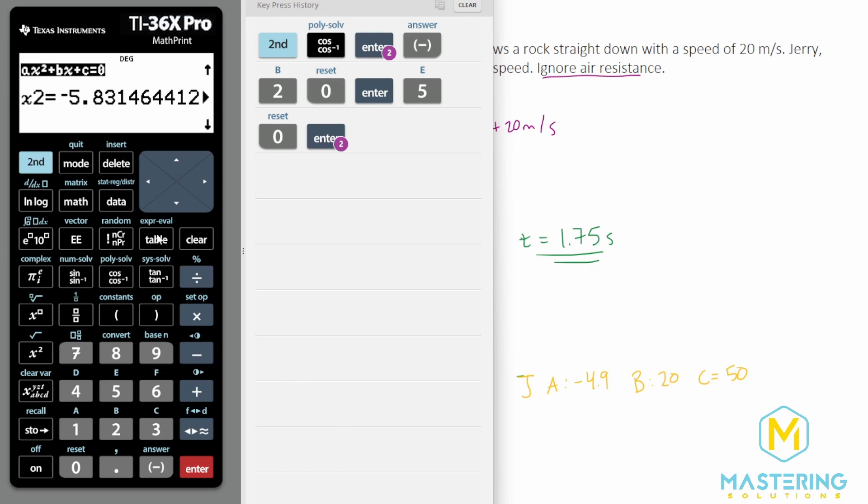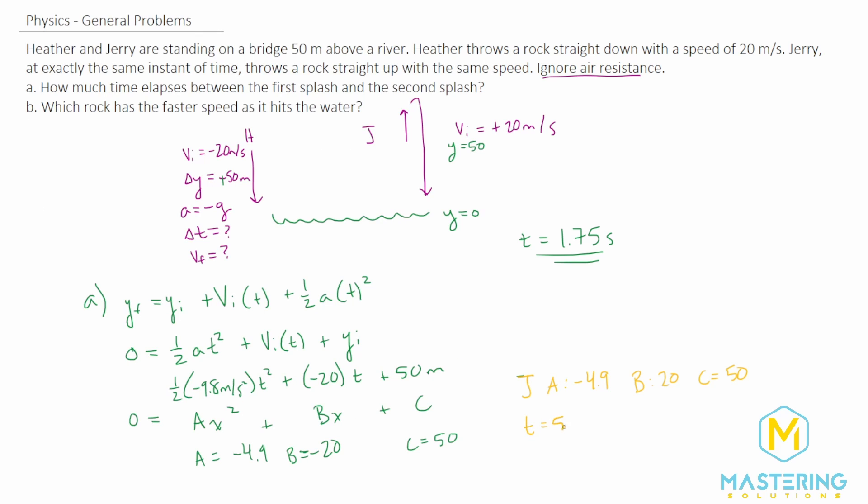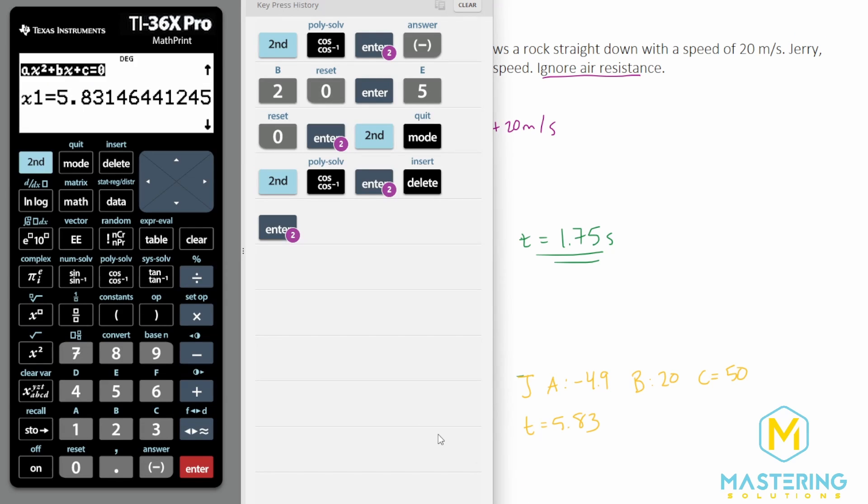So when we go back to our poly solver at negative 4.9, and then we're going to have a positive 20 and 50. So for him, the time will be the 5.83. And you'll see the other one is, it just basically flip flopped. We have the 1.75 or the 5.83.